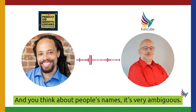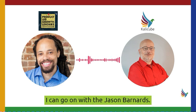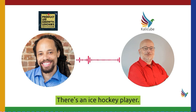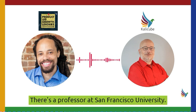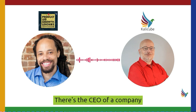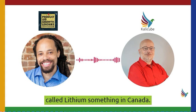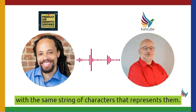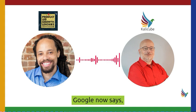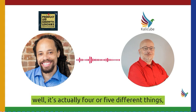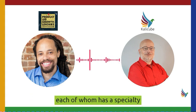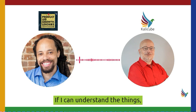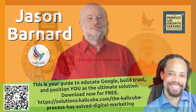When you think about people's names, it's very ambiguous. There's a circus clown in South Africa, an ice hockey player, a professor at San Francisco University, the CEO of a company called Lithium something in Canada — each of them needs to be individually understood with the same string of characters that represents them. Google now says it's actually four or five different things, each with a speciality and each relevant to a different audience. If it can understand the things, it can give a much better answer than if it's understood just the strings.